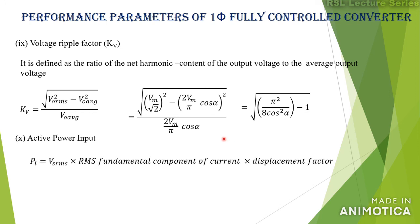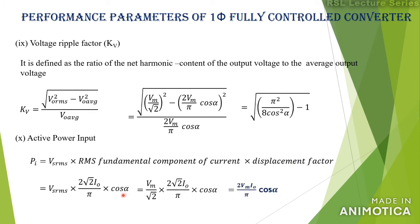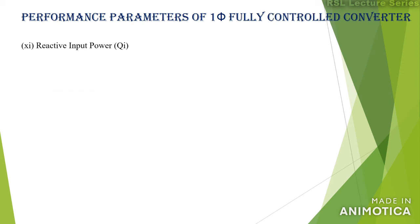The active power input is given by Vs(rms) × is1(rms) × displacement factor. With Vs(rms) = Vm/√2 and is1(rms) = 2√2·i₀/π and displacement factor = cos α, on simplification the active power input = (2Vm/π)·i₀ cos α. Similarly, the reactive input power = Vs(rms) × is1(rms) × sin α = (2Vm/π)·i₀ sin α.